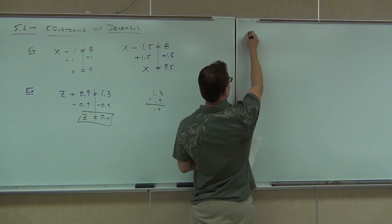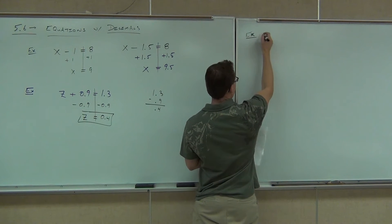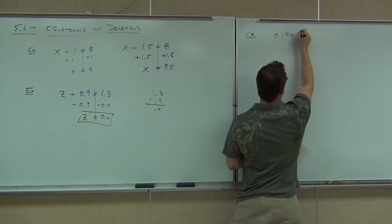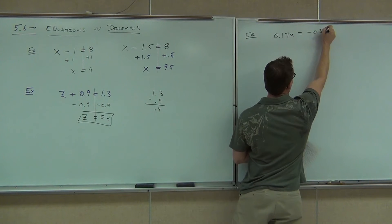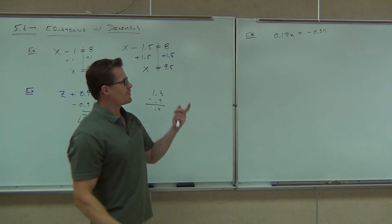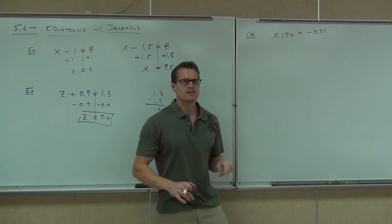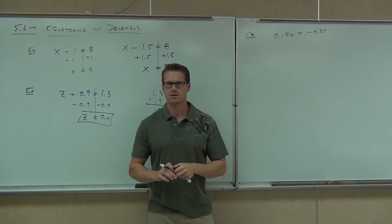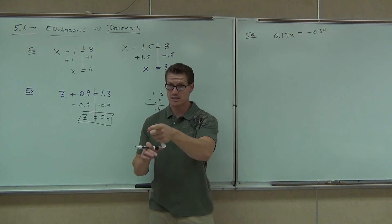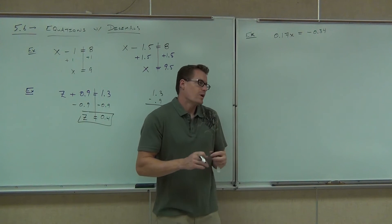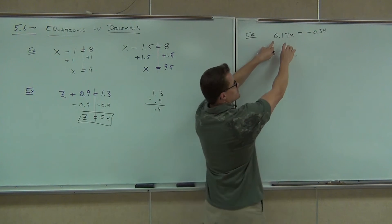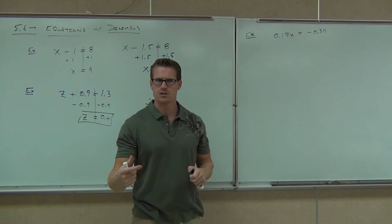Is it still possible to do an example like this? Let's say we had 0.17x equals negative 0.34. I know x is our variable and I'm trying to get that by itself. Is it appropriate to subtract 0.17 here? No. What does 0.17x mean? It means times. How do we undo the times? Divide. We know that any time we have a number in front of x, that's called a coefficient. Can you say coefficient with me? Coefficient.